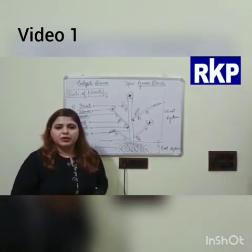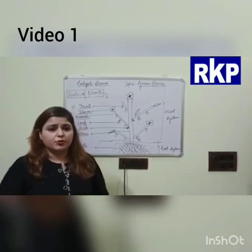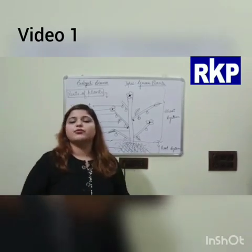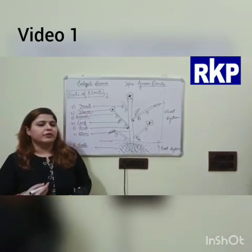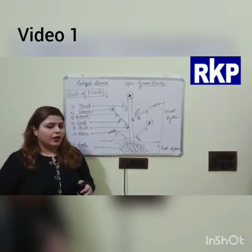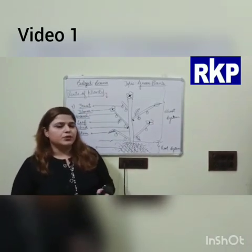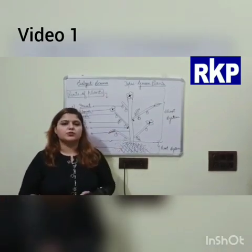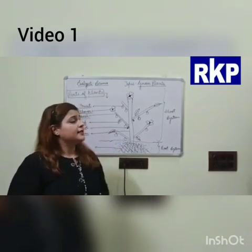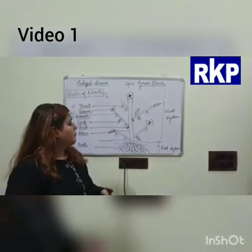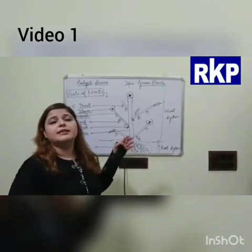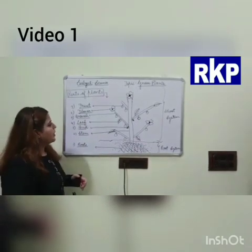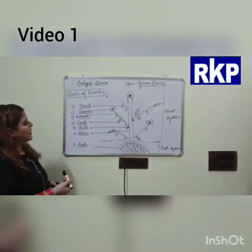For example, consider human beings. Whether a human being is in India or in America, the body structure will be the same — two eyes, one nose, two ears, one mouth, one face, two legs, two arms and so on. Similarly, plants also have the same structure, meaning the parts of plants are also the same. So let us start.